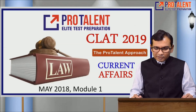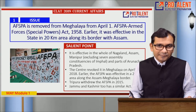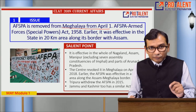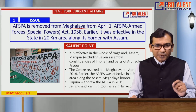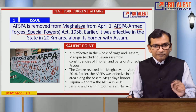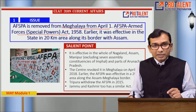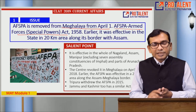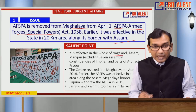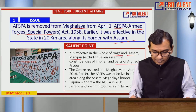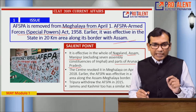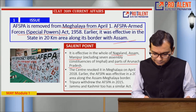First point: AFSPA is removed from Meghalaya from 1st April. AFSPA's full form is Armed Forces Special Powers Act, 1958. Earlier it was effective in Meghalaya only in a 20-kilometer area along the Assam border. Now it is effective in the whole of Nagaland, Assam, Manipur, and certain parts of Arunachal Pradesh. The Centre revoked it in Meghalaya on 1st April 2018.